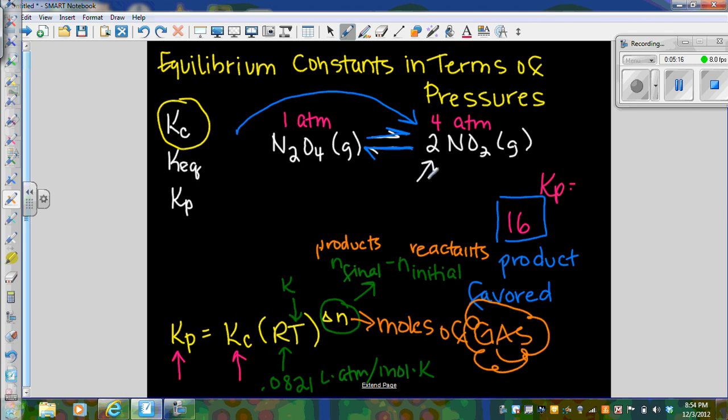So like if I'm looking at this equation, I'm going to focus on products first. So I have two moles of gas, and then I look at reactants, coefficient of one, so two minus one is going to be one. I can get a negative number for that. I want to pay attention. But on this one, I happen to get a positive number.